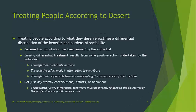Let's examine first treating people according to what they deserve, or desert. I don't mean ice cream, but desert in the sense of what people deserve or what people have earned. Treating people according to what they deserve justifies a differential distribution of the benefits and burdens of social life because this distribution has been earned by the individual, either as reward or as punishment. These terms reward and punishment are often used in the context of deservingness. Earning a differential treatment results from some positive action undertaken by the individual.